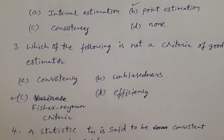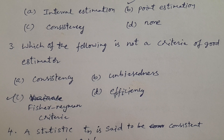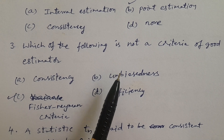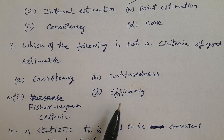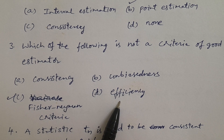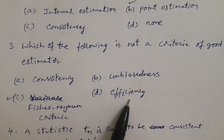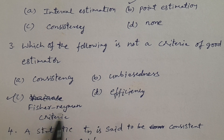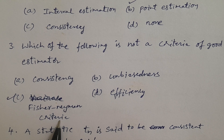Question number three: Which of the following is NOT a criteria of a good estimator? A. Consistency, B. Unbiasedness, C. Fischer-Neumann criteria, D. Efficiency. The criteria of a good estimator are consistency, unbiasedness, and efficiency. Therefore, Fischer-Neumann criteria is not a criteria of a good estimator.